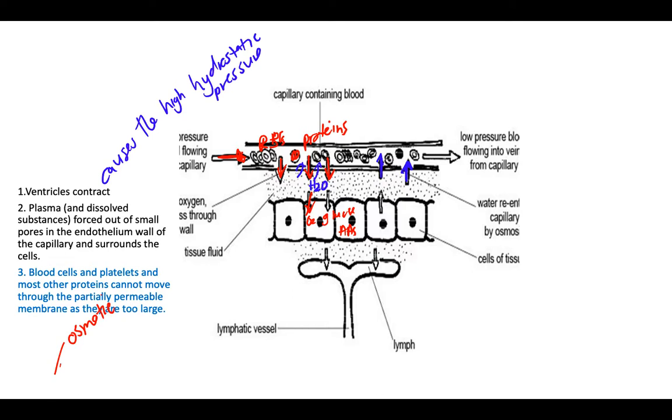At the venule end, we now have low hydrostatic pressure because most of the fluid has moved out already. So there's low volume in this end of the capillary, meaning low pressure.